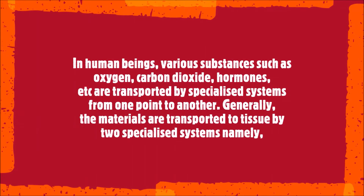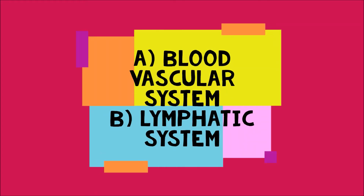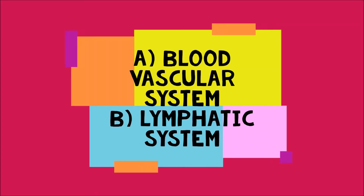In human beings, various substances such as oxygen, carbon dioxide, hormones, etc. are transported by specialized systems from one point to another. Generally, the materials are transported to tissue by two specialized systems: the blood vascular system and the lymphatic system.